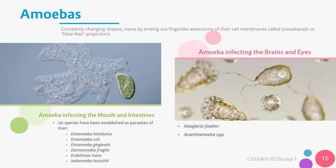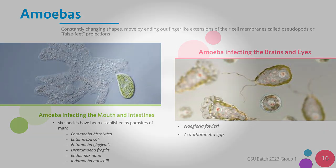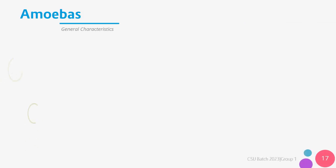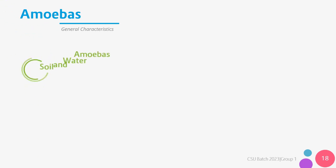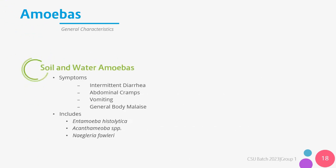Amoeba infecting the brains and eyes include Naegleria fowleri and those under the genus Acanthamoeba. For intestinal and luminal protozoa, all amoebas are capable of producing cysts and trophozoites, except for Entamoeba gingivalis and Dientamoeba fragilis. They are found in the colon except Entamoeba gingivalis, which is found in the oral cavity, and all are commensals except for Entamoeba histolytica. Soil and water amoeba includes Entamoeba histolytica, those under the Acanthamoeba genus, and Naegleria fowleri. If infected, symptoms include intermittent diarrhea, abdominal cramps, vomiting, and general body malaise.